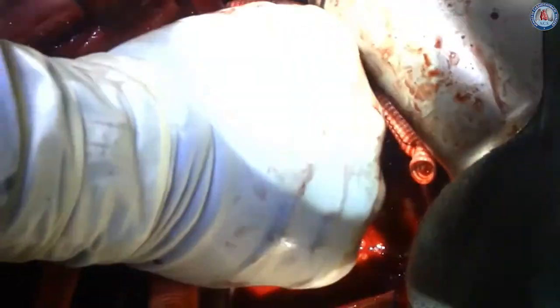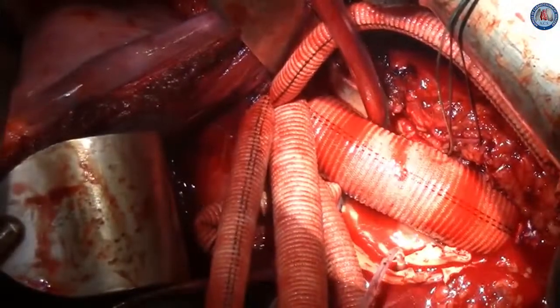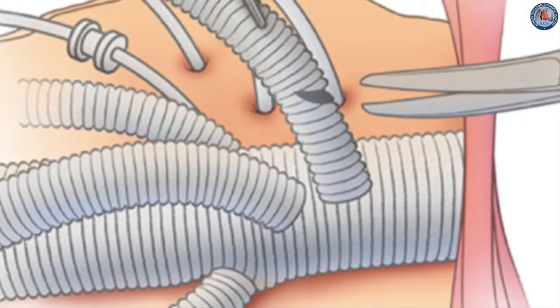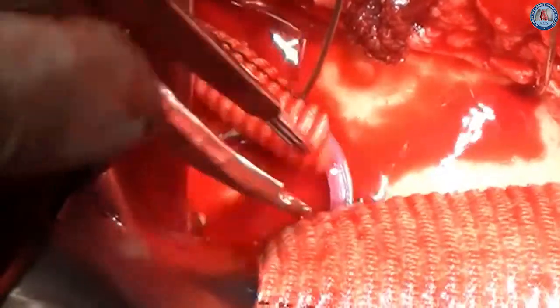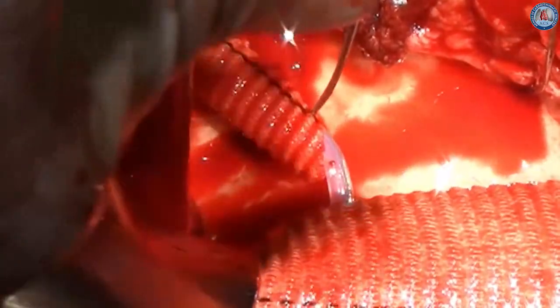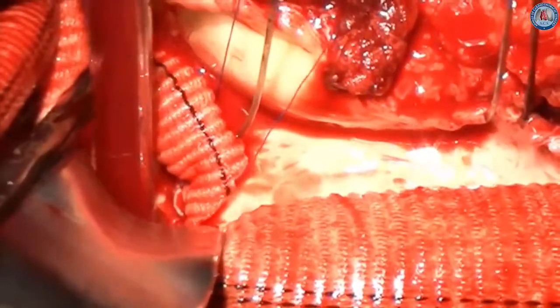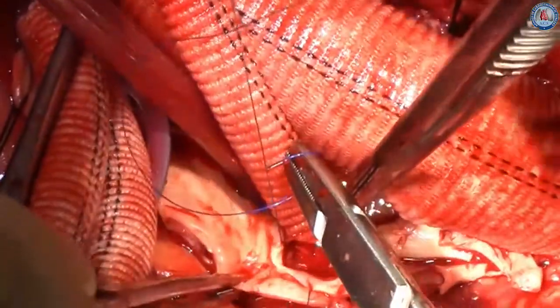The anastomosis is then completed and the graft de-aired, re-establishing flow to the pelvic circulation. Distal aortic perfusion will be continued to allow warming of the patient to 35 degrees Celsius. The grafts are then cut to the appropriate length and sequential anastomoses are performed. In this case, the right renal artery is first reattached, then the left renal artery, followed by the superior mesenteric artery, and finally the celiac axis.